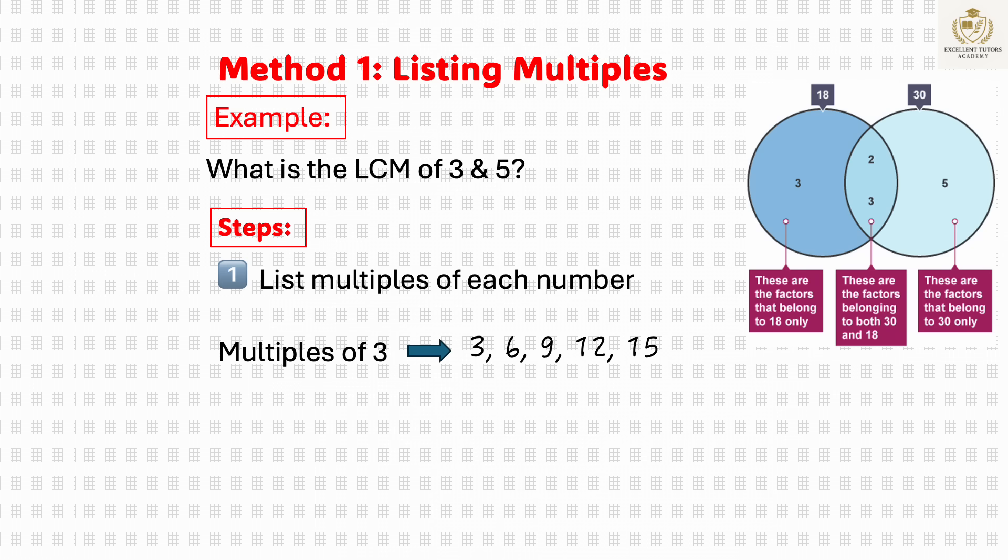The multiples of 3 are 3, 6, 9, 12, and 15. The multiples of 5 are 5, 10, 15, 20, and 25.